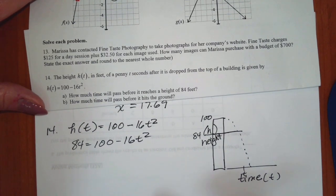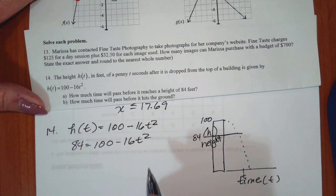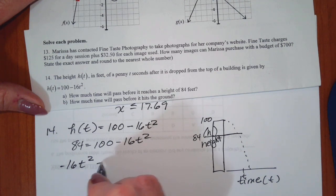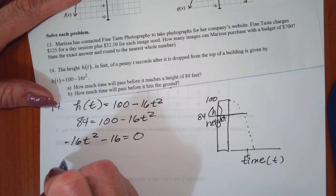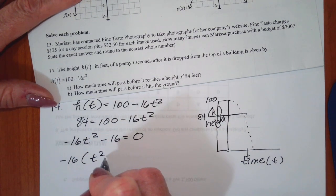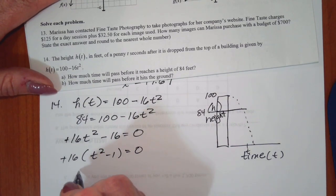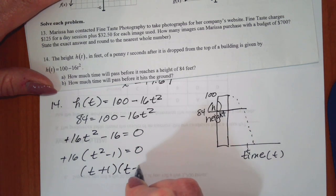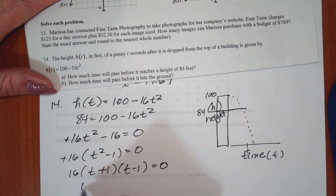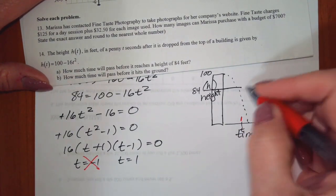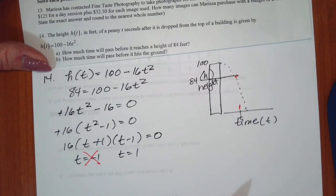So we just say 84 is equal to 100 minus 16t squared. It's a quadratic, so I want to set it equal to zero. I prefer having my leading coefficient positive. So this is going to give me 16t squared minus 16 is equal to zero. I'm going to factor out a 16 and I get t squared minus 1. This factors into t plus 1 times t minus 1. So this tells me that t is negative 1 and t is 1. Well, you can't go backwards. So you can't have a negative 1 second. So at 1 second, the height is 84 feet. That's part A.